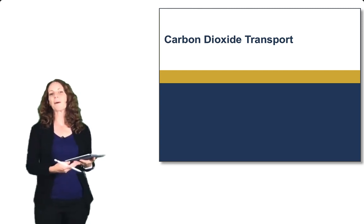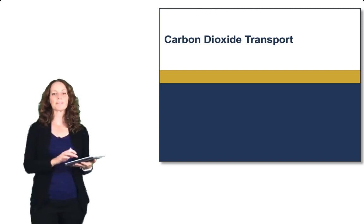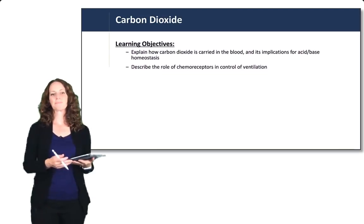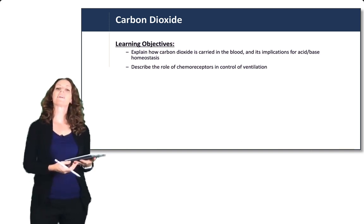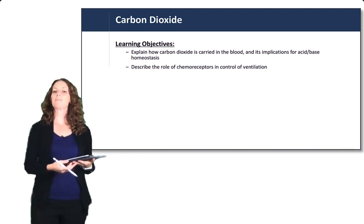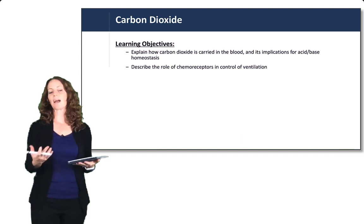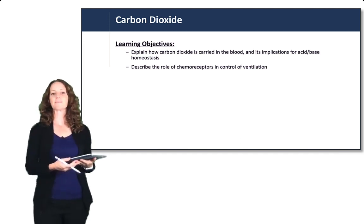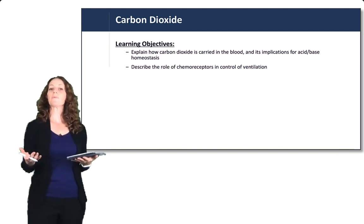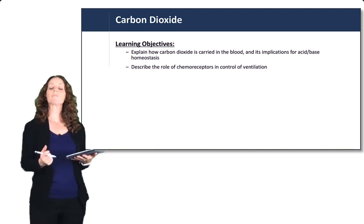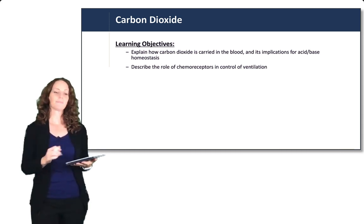In this lecture, we will talk about carbon dioxide transport. We will explain how carbon dioxide is carried in the blood and its implications for acid-base homeostasis. We will also describe the role of chemoreceptors in the control of ventilation.